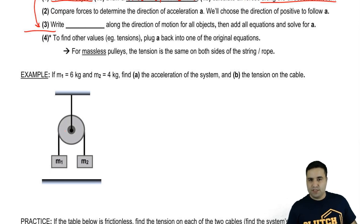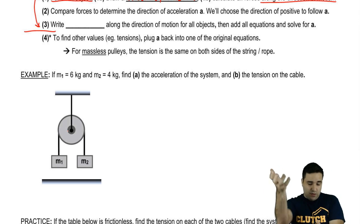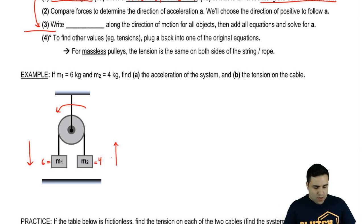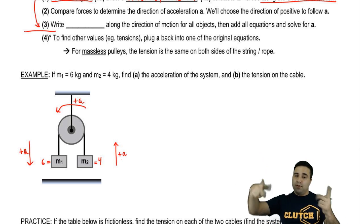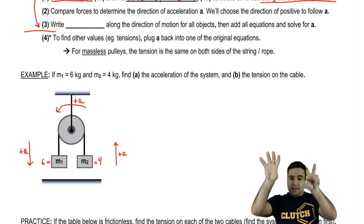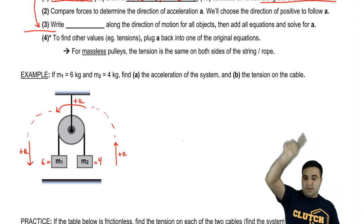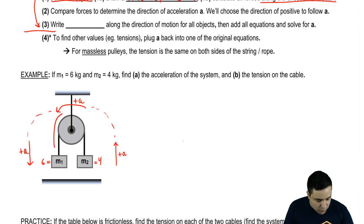Let me talk about direction of motion using this example. If you have a pulley and two blocks, whichever block is heavier, the system will move in the direction of the heavier one. Here I have a 6 and a 4, so the system will move such that the pulley spins this way — the 6kg side goes down and the 4kg side goes up. We're going to say that direction is positive. So the direction of positive is down for one object and up for the other — but realize these are really the same direction, like going around the pulley. We need to calculate all the forces along this direction of motion.